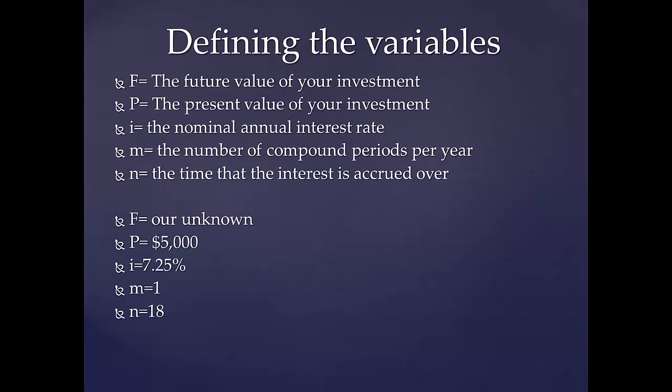First, you need to identify the variables in this example using notation you're familiar with. F is the future value of your investment. P is the present value of your investment. I is the nominal annual interest rate. M is the number of compound periods per year. M equals 1 because the interest is compounded annually, so just once per year. N is the number of years interest is accrued.